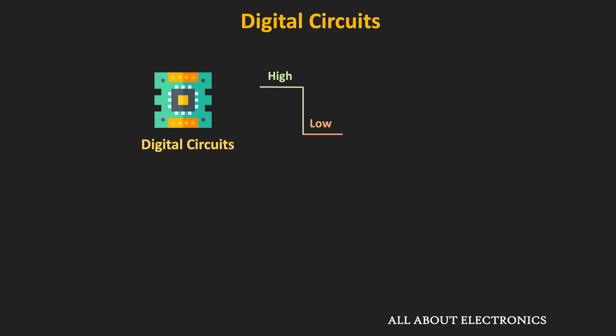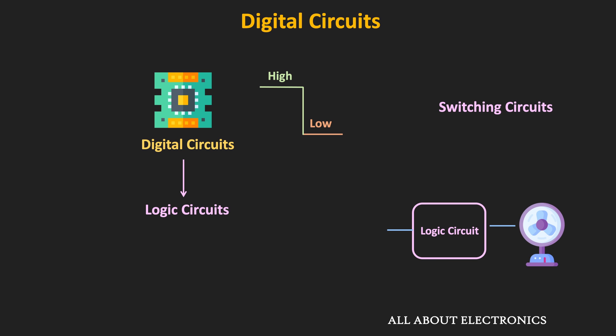In digital circuits, the voltage level continuously switches between high and low levels, so they are also known as switching circuits. Using these digital circuits, it is also possible to perform several logic operations where the output is high or low based on certain logic conditions — and therefore they are also known as logic circuits. For example, you can design a circuit that turns on a fan when it is daytime and whenever the temperature goes beyond 25 degrees.